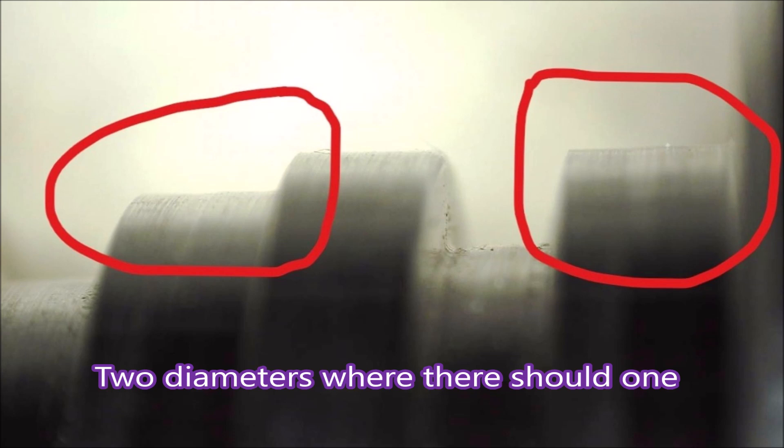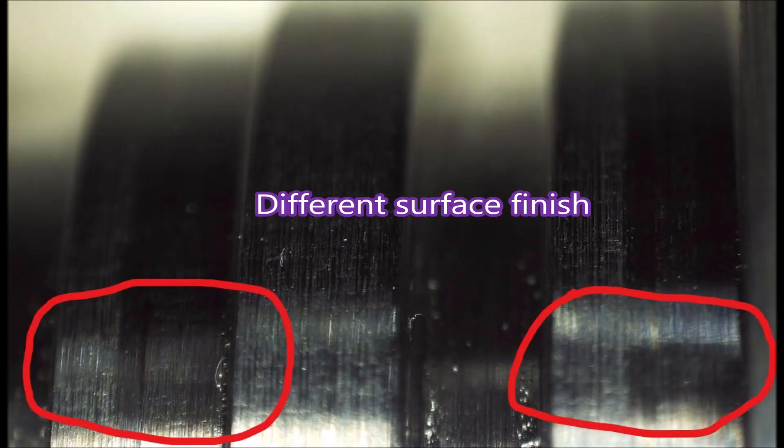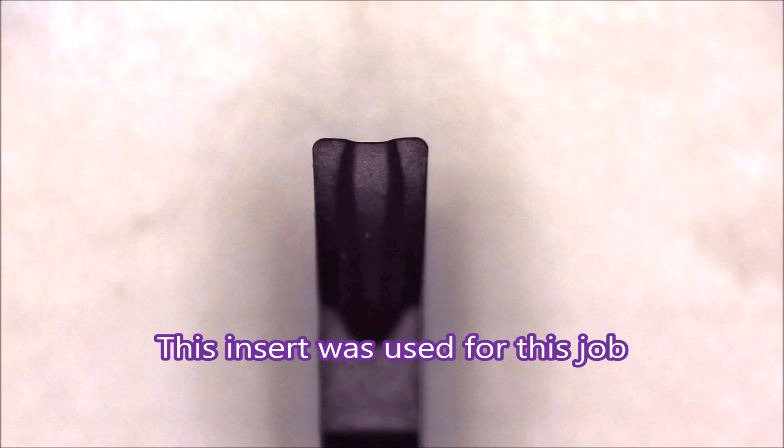This is the two diameters that you can see under the microscope. You can see they're definitely different - that's a different surface finish. That's a shot of the front of the grooving tool I was using. That's the insert.